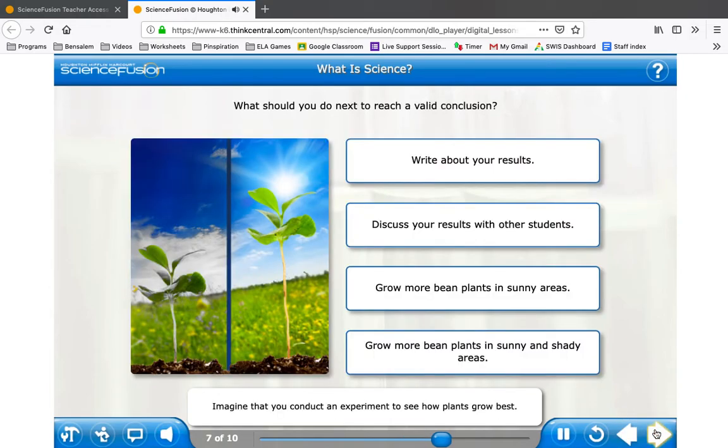Imagine that you conduct an experiment to see how plants grow best. First, you put one bean plant in a shady area and one in a sunny area. The plant you grew in the sunny area grows taller than the plant in the shady area. What do you need to do to reach a valid conclusion about this experiment? Click the correct answer.